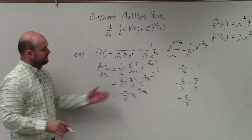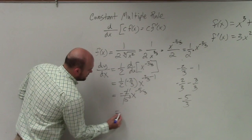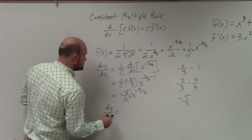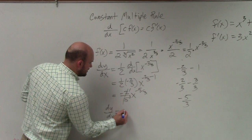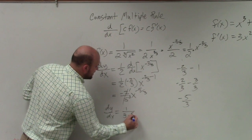Since that's negative, I can rewrite that in the denominator, and I simplify that to 1/3. So my final answer of dy/dx is 1 over 3x^(5/3).